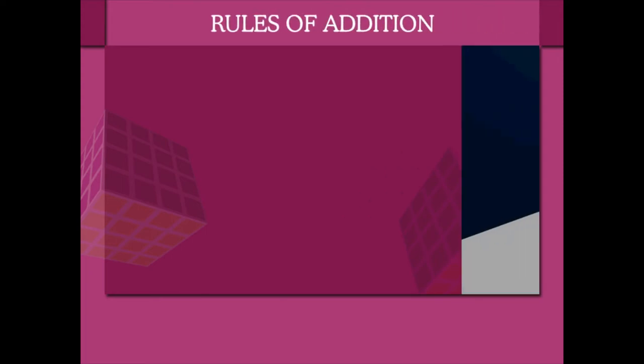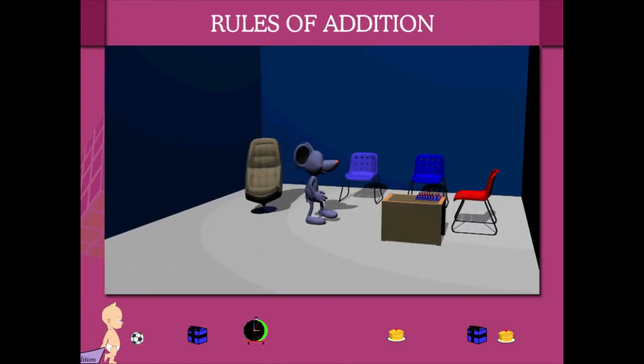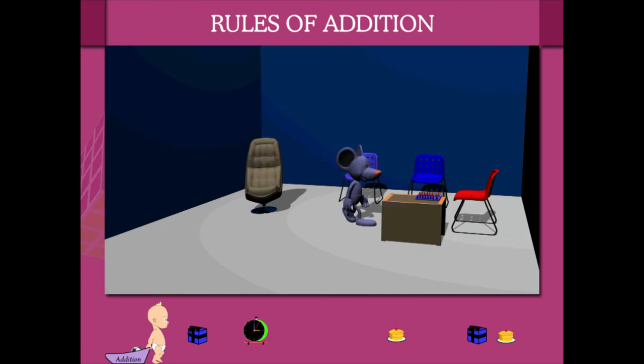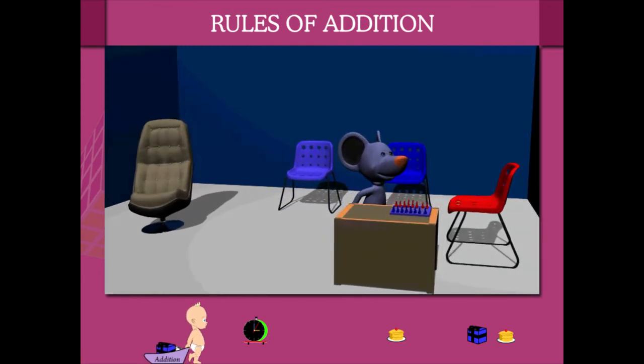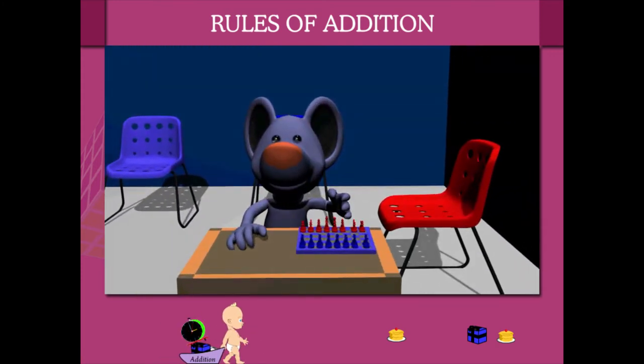Rules of Addition. The first and the most interesting rule of addition is that if you add two numbers, no matter what their order is, their sum remains the same.